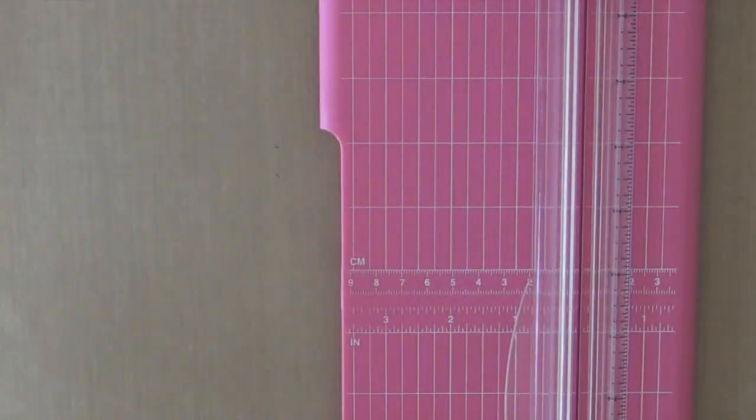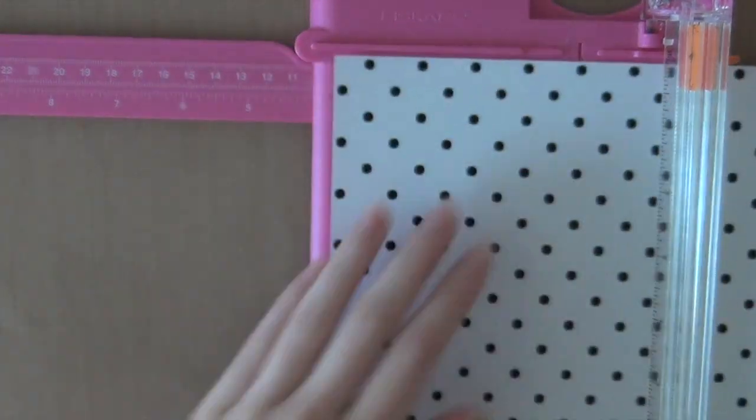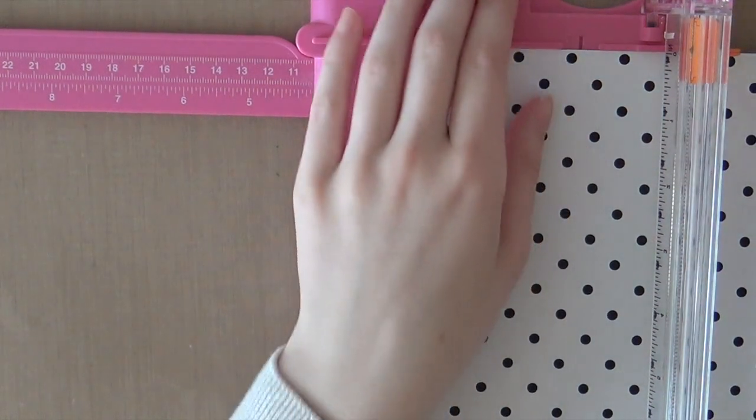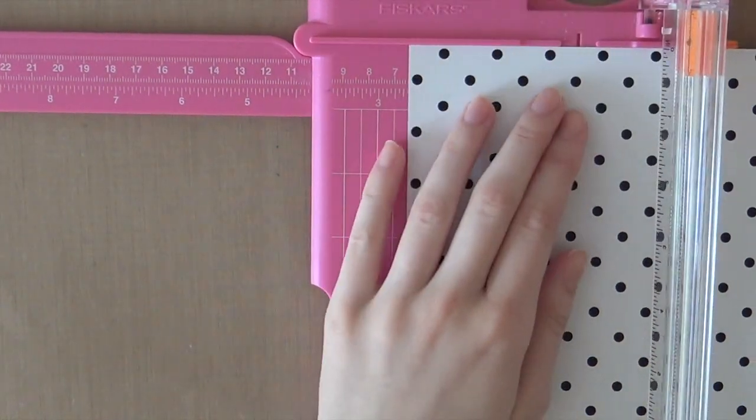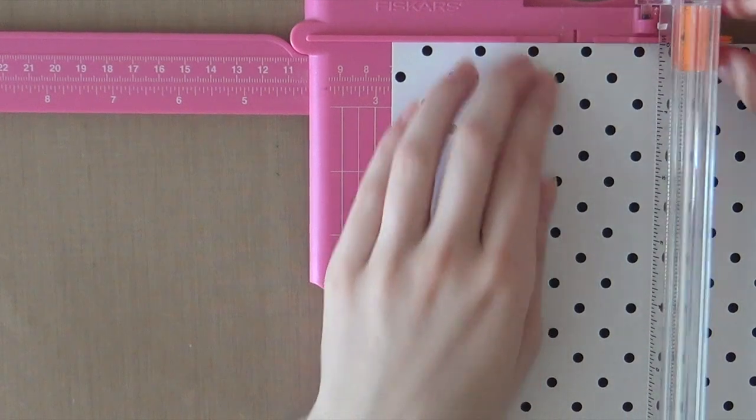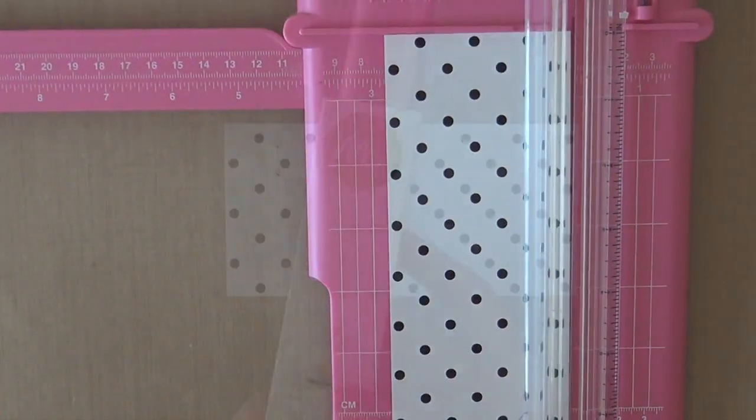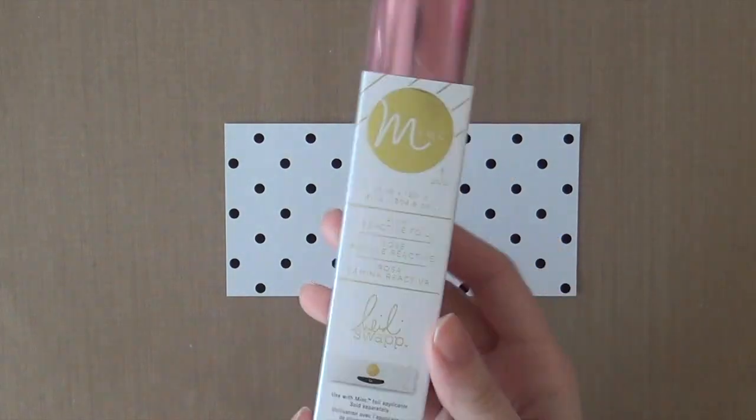I'm going to start out with a piece of 12x12 paper from Heidi Swap. This is from the 5th Avenue collection from the Mink line and I'm using this polka dot paper. I'm cutting it to 2 and 3 quarters of an inch by 5 and a half.